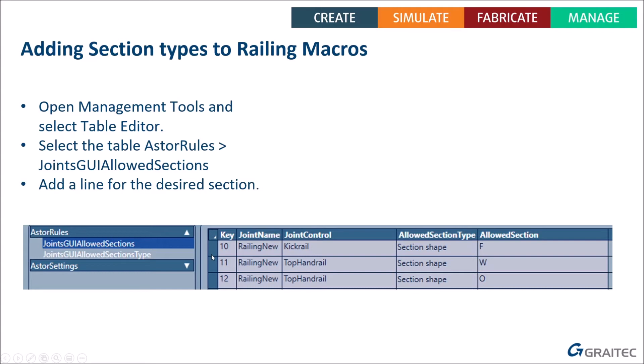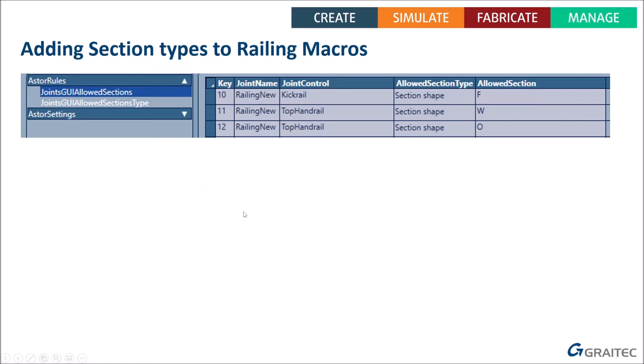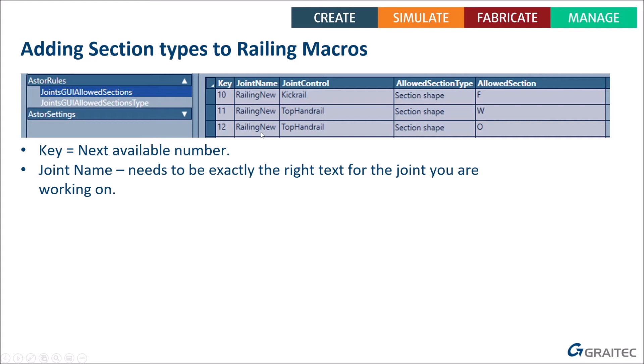Go to Management Tools, select Table Editor, then navigate to AsterRules > Joints GUI Allowed Sections. You can use the filter at the bottom — tick the filter box and type 'GUI' to quickly find the right table. You need to add a brand new line at the bottom for your new section. There are five columns. The key number is just a counting number — put in any number not already used, e.g. 928 if the last entry is 927. The joint name column requires a specific recognized name — you have to know the right name to put in that box.